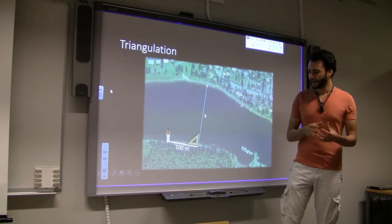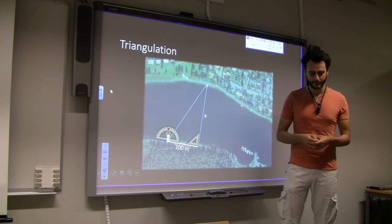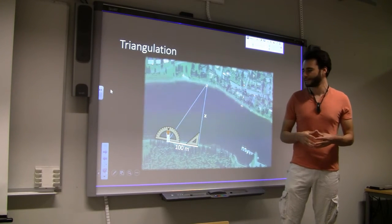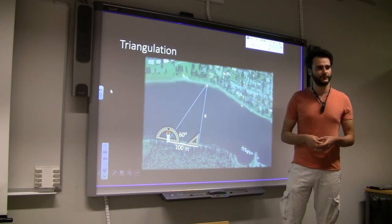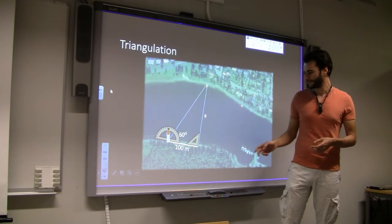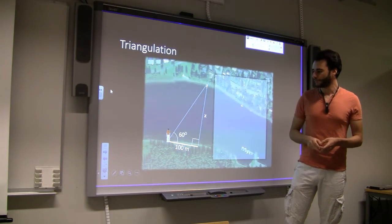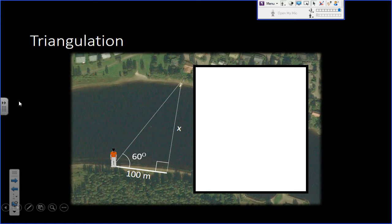After that you have this very simple geometric situation that you might have done in school. You have a right angle triangle and you want to figure out what is the value of x when you know how many steps you did and you know the new angle that you are looking at. This is quite basic stuff. Does anybody know how to solve this problem? You have the angle - anybody remember what is the tangent of 60 degrees?